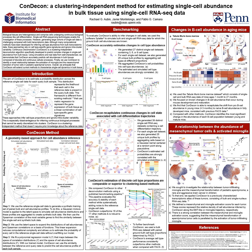To further evaluate the top-performing methods, including CondiCon, we leverage a bulk RNA-seq dataset with paired ground-truth cell type proportions determined by FACTS. CondiCon's average cell type performance consistently outperforms other methods when compared to the FACTS data. These results highlight the utility of aggregating CondiCon cell probabilities into discrete cell type proportions.